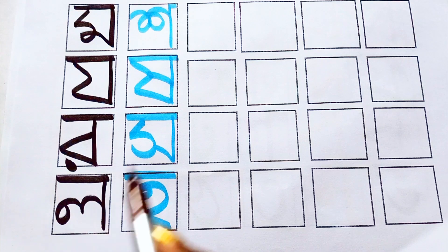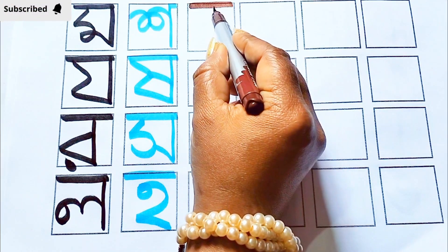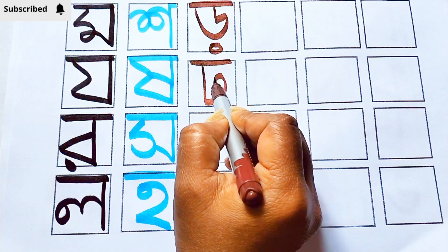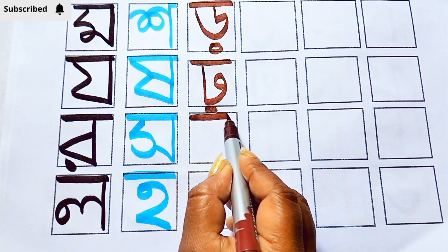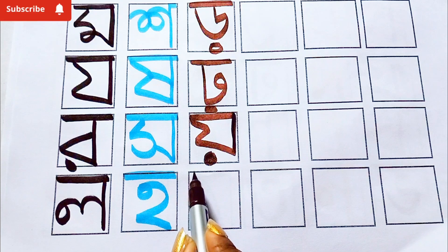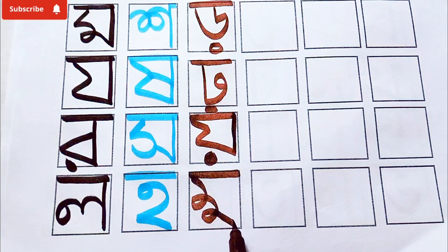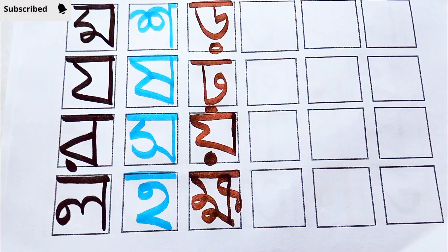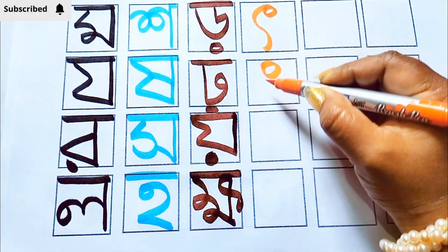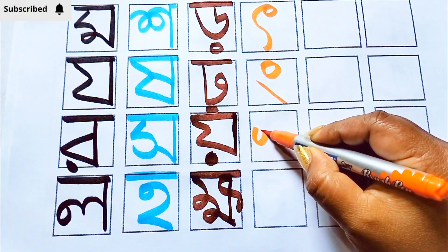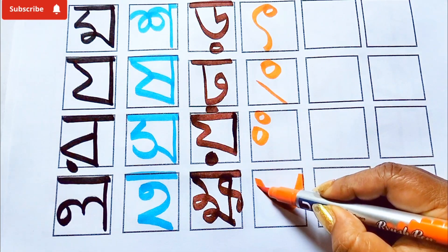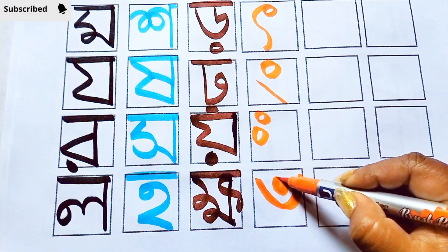Sky blue color. બ્રાઉન કલાર (Brown color). અરેંજ કાલાર (Orange color). ચંદ બીંદુ તે ચાદ, ચલા।